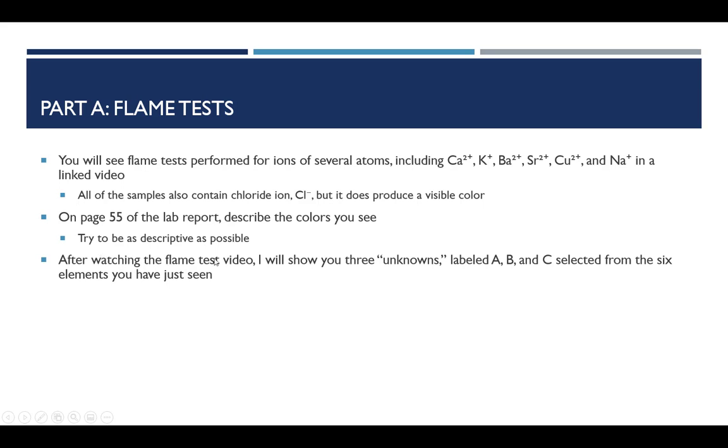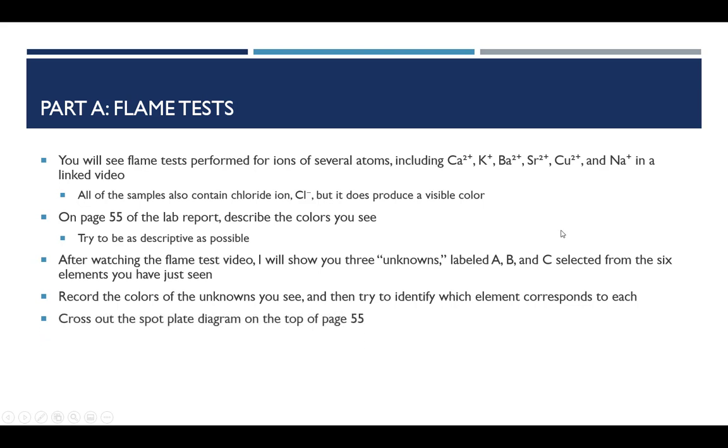Once you've watched these flame test videos, I'm going to show you unknowns which were taken from that video. And they're going to be from these six here, not lithium. And your job is to go ahead and figure out which one of these ions is unknown A, which one of these ions is unknown B, and which is C. I'm not going to do the same one twice. So then you're going to record the colors of the unknowns and then try to match the unknown with its element. The spot plate diagram is only useful when we're performing this experiment in the lab, so just cross that out on the top of page 55, and I won't go into it in any greater detail.